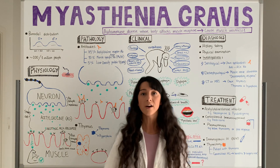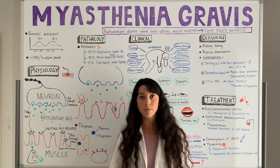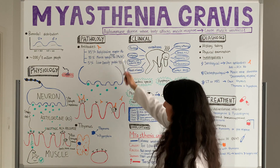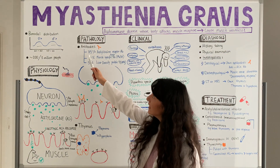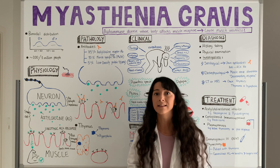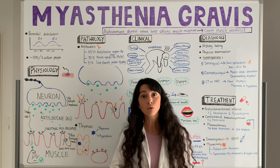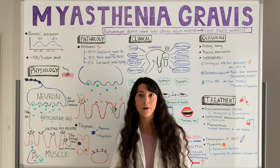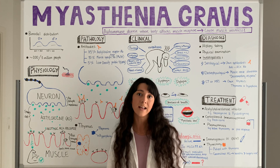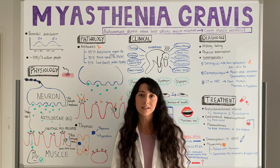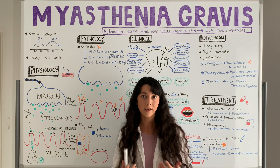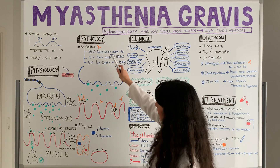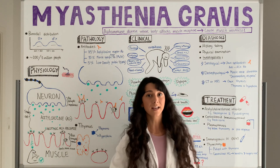Starting with antibodies, there are three different types of antibodies that can cause problems and lead to myasthenia gravis. The first one is called acetylcholine receptor antibodies, and that's the most common one, seen in 85% of cases. This type of antibody is immunoglobulin G, IgG type. IgG antibodies can cross the placenta, meaning if a woman gets pregnant, there is a risk the child will receive this antibody and develop myasthenia gravis. The second type is called muscle-specific kinase antibodies, seen in 10% of cases.